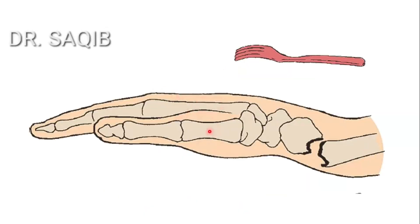This is the dinner fork deformity. Here you can see this is the radius — this is the distal end of the radius. It is broken; it's a transverse fracture, and this resembles a fork. This is the dinner fork deformity.